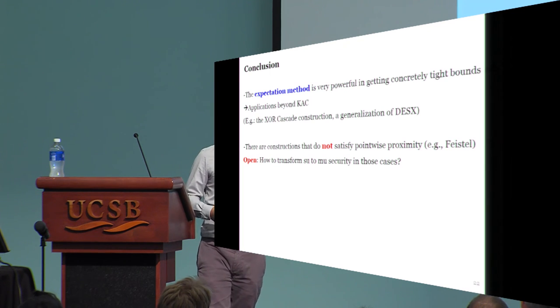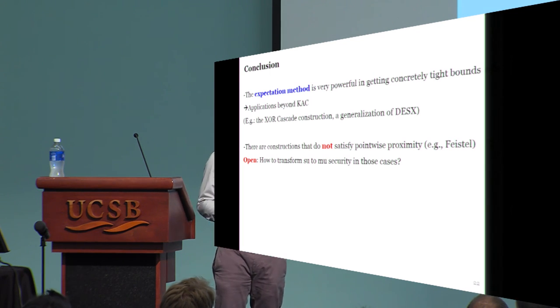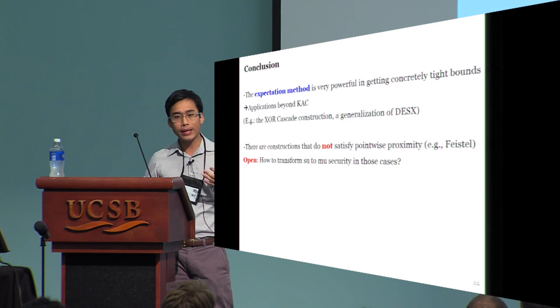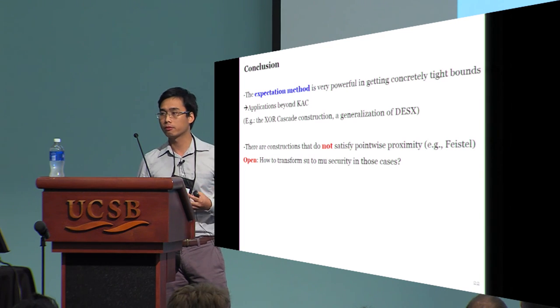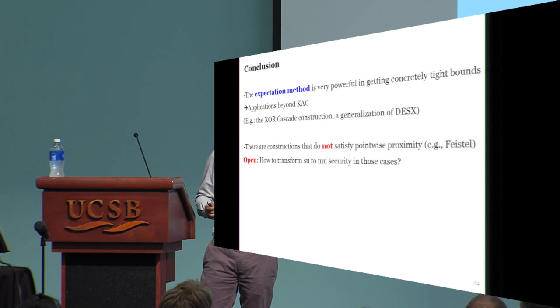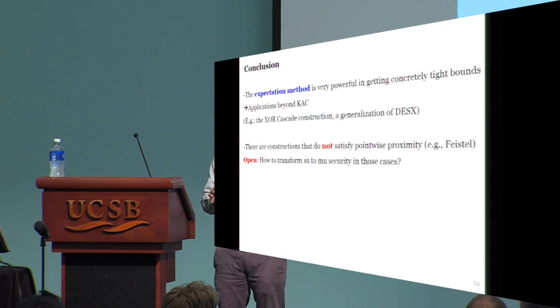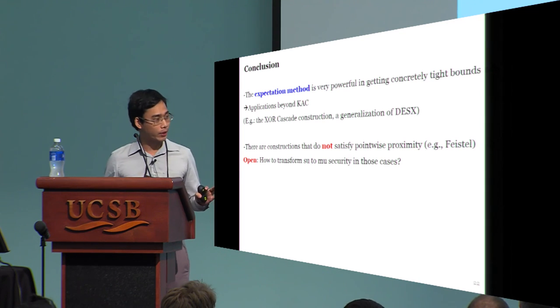But there must be other applications. For the translation, I think it's elegant, but it needs the pointwise proximity condition. Not all constructions meet these requirements. For example, Feistel networks. So it would be interesting to extend our results for those unfitting cases. And that's it. Thank you.